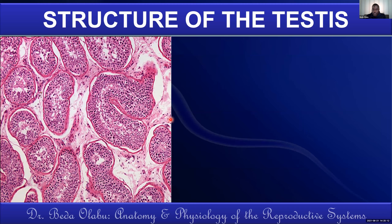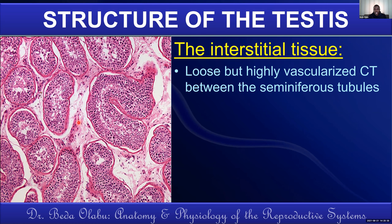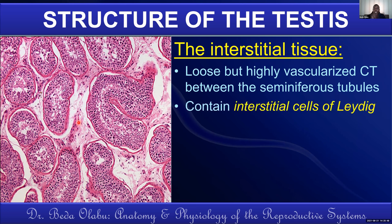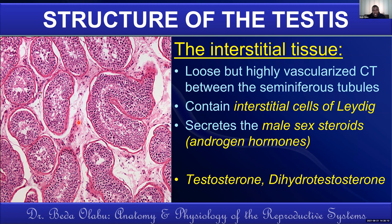The second entity of the testicular parenchyma is the interstitial tissue. The interstitial tissue consists of loose connective tissue that is richly vascularized with many capillaries. Within this loose connective tissue are the interstitial cells of Leydig, which are responsible for secreting the male sex hormones — androgens. The key male sex hormones from the interstitial tissue are testosterone and dihydrotestosterone.